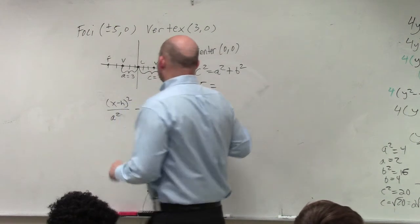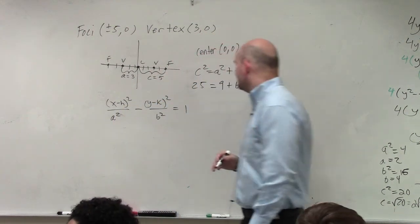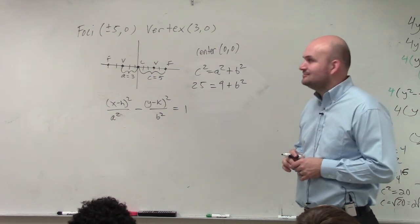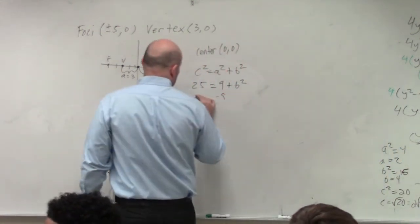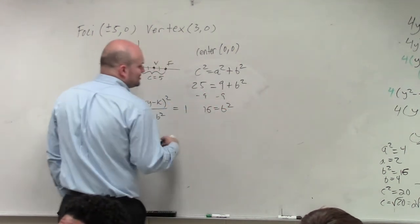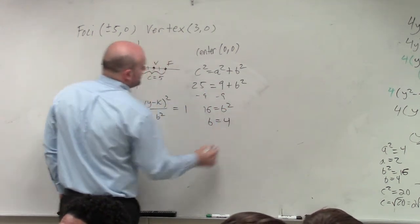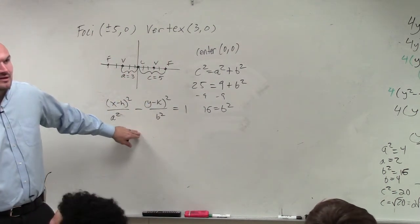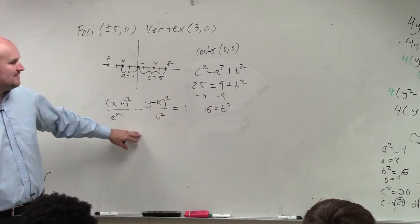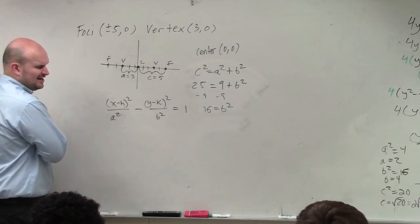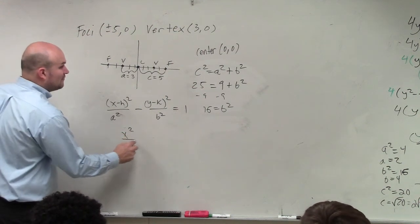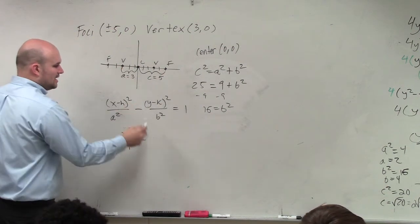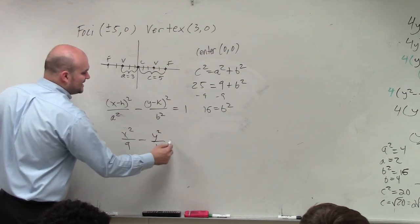So 25 equals 9 plus B squared. That gives us 16 equals B squared — so B squared is equal to 16. Now I can just plug in all my information. I don't need to write in zero for H and K. So I can just write x squared over A squared, which is 9, minus y squared over B squared, which is 16, equals 1.